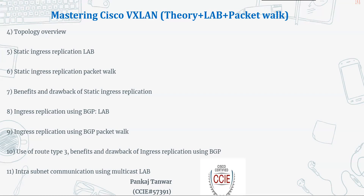We'll discuss the benefits and drawbacks of static ingress replication. Then we'll discuss dynamic ingress replication using BGP, do a lab, and after the lab do a packet walk. We'll discuss route type 3, and the route types supported by Cisco deployment — specifically route type 2, route type 3, and route type 5 — along with the benefits and drawbacks of dynamic ingress replication using BGP.